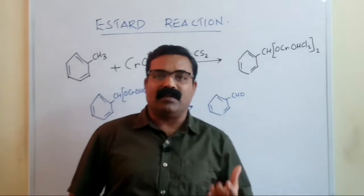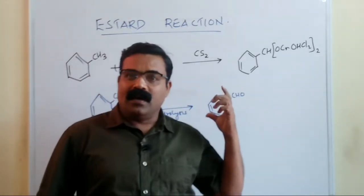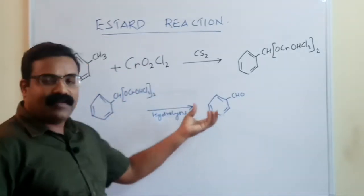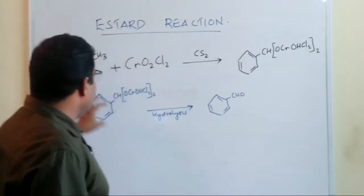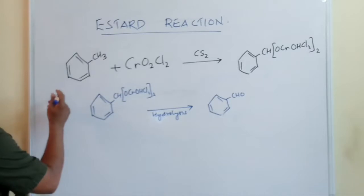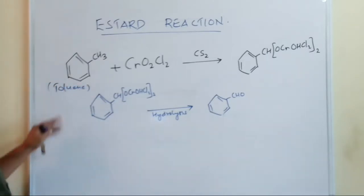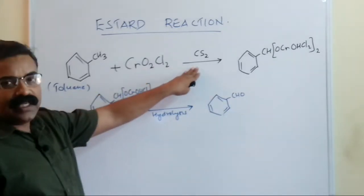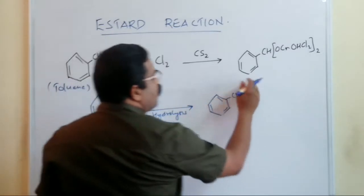The Étard reaction is one of the very important methods of preparation of aldehyde from hydrocarbon. So what are we doing here? We are taking toluene, which reacts with chromium chloride in the presence of CS2 — carbon disulfide — and here we are getting a chromium complex.